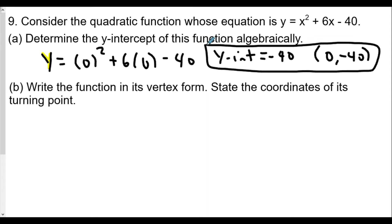Part (b) write the function in its vertex form and state the coordinates of its turning point. We're going to find the vertex, so we'll use our axis of symmetry again: x equals negative b over 2a. So x equals negative 6 over 2 times 1, x equals negative 3. That's the axis of symmetry.